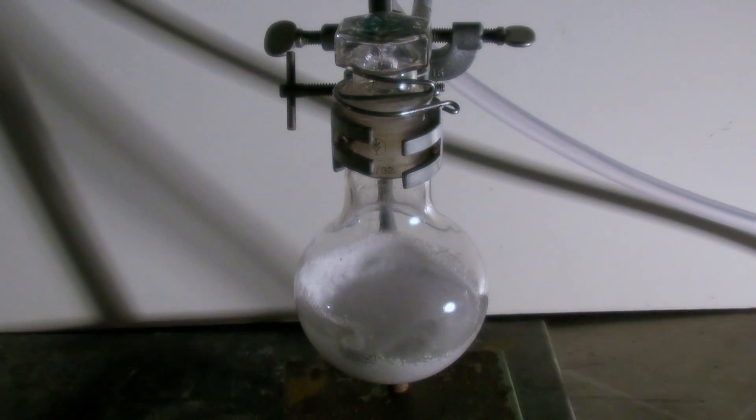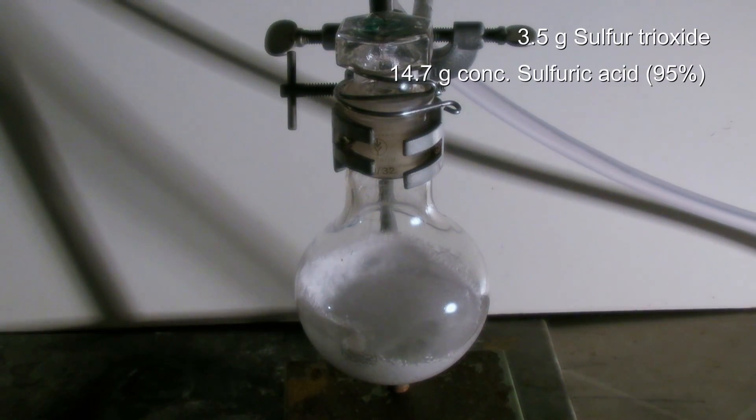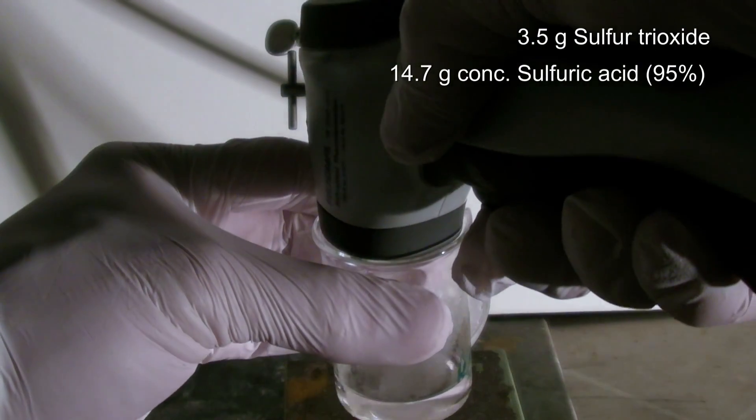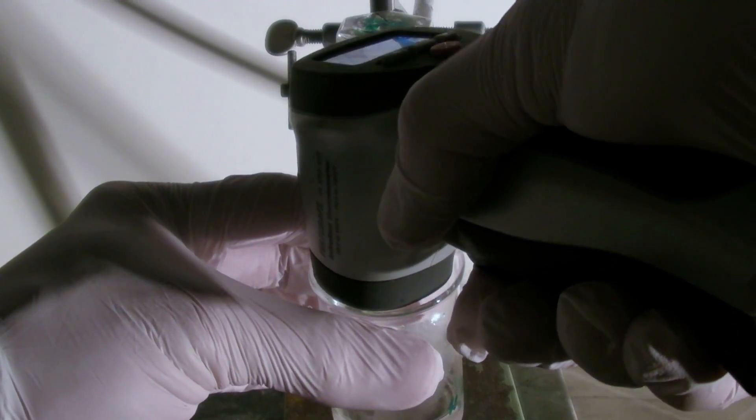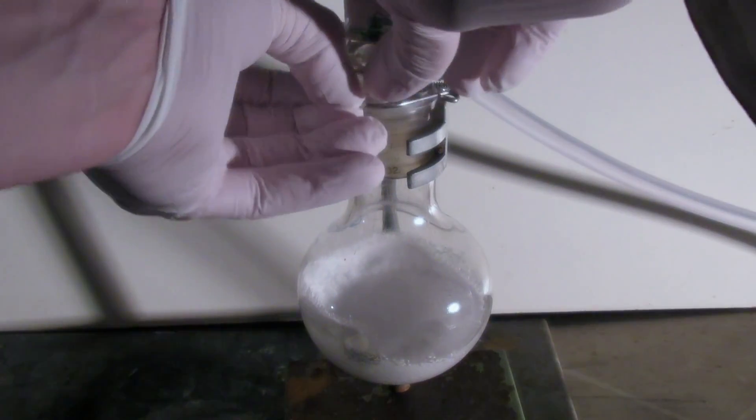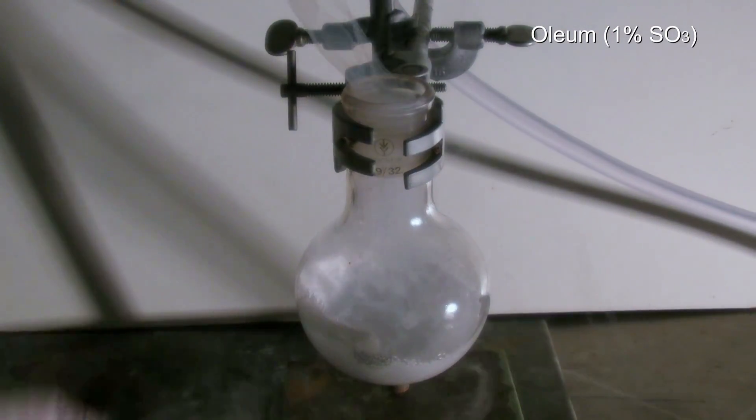For the experiment I wanted to prepare a 20% solution of sulfur trioxide (SO3) in sulfuric acid, which is also called oleum. 3.5 grams of sulfur trioxide were available, to which 14.7 grams of concentrated 95% sulfuric acid that had been previously cooled to 0 degrees C were added. Due to an underestimation of the influence of the water content in the acid, a mistake was made in the calculation, so the oleum that was prepared only has a concentration of 1% sulfur trioxide, which was obviously still enough for the experiment.